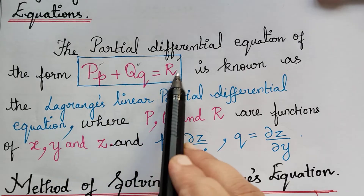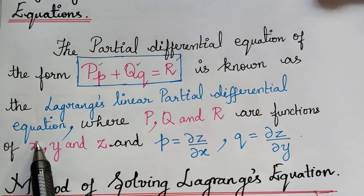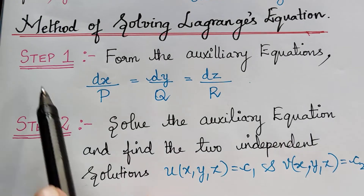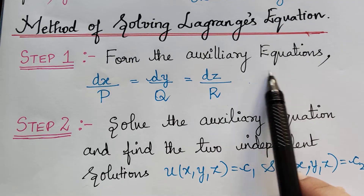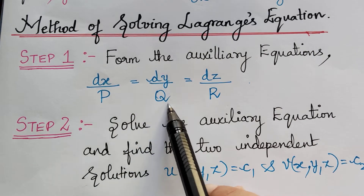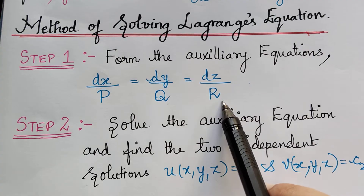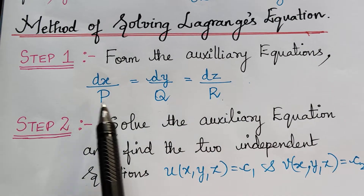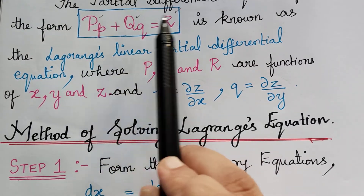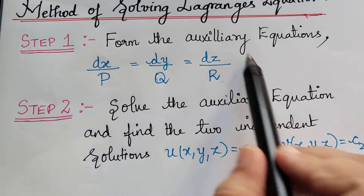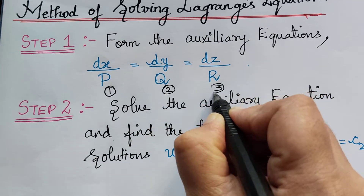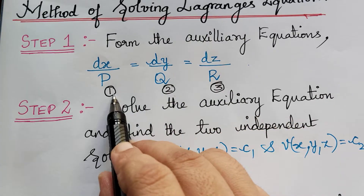This equation is known as Lagrange's linear partial differential equation. We shall now learn how to solve it. The first step in the method of solving Lagrange's equation is to form the auxiliary equations. The auxiliary equation is given by dx by capital P equals dy by capital Q equals dz by capital R. We take the values of P, Q and R from the given equation and substitute into this auxiliary equation. We can mark dx/P as 1, dy/Q as 2, and dz/R as 3, so that comparing equations while solving is easier.